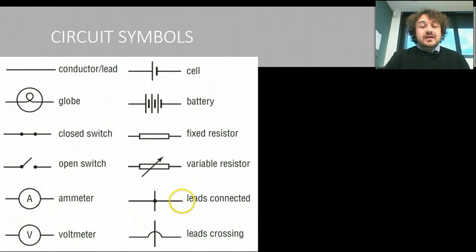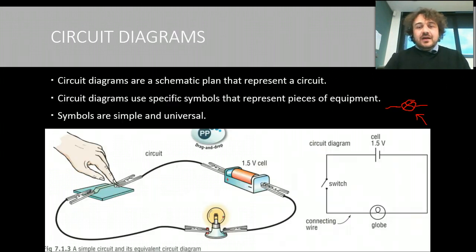You've got an ammeter, a voltmeter, leads connected—so that's where they cross paths—or leads crossing, so they go over each other but they're not actually connected. And if we go after this one, you'll see that your circuit has corners and it's drawn with a ruler.